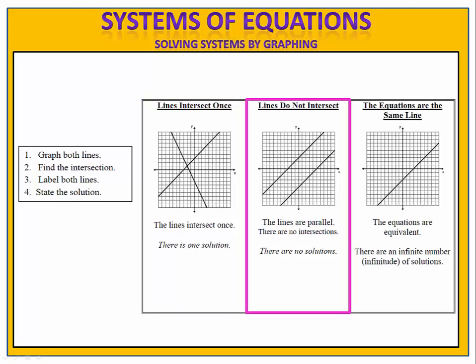Sometimes when we look at the solution sets, we see that the lines are parallel, meaning there are no intersections. In this case, because the solution sets don't intersect, there are no values in common that satisfy both equations simultaneously. In this case, we say there are no solutions.